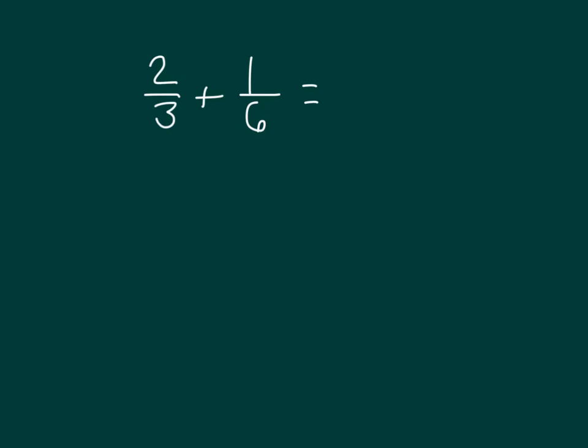Here we're asked to add two-thirds plus one-sixth. We'll notice that they are not like units. In one case we're working with thirds, and in the other case we're working with sixths. Let's draw a tape diagram for each of those fractions.